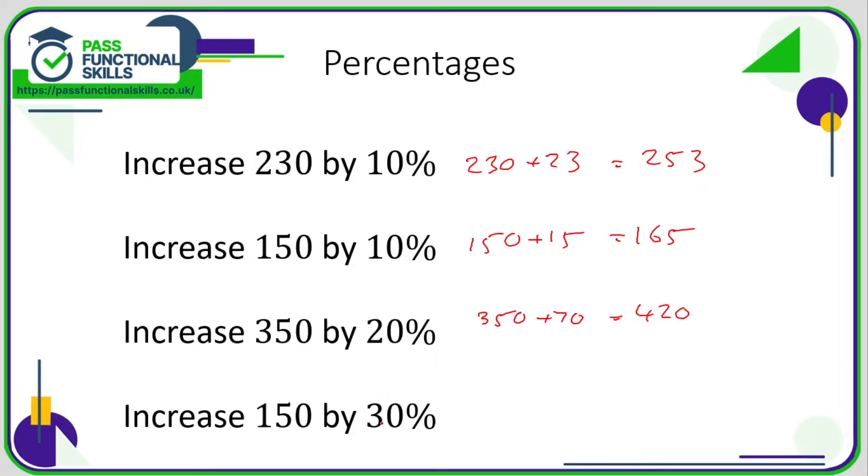Increase 150 by 30%. Well, we need to work out 30% of this amount first and then add it on. 10% is 15, so 30% is 45. So it's 150 plus the 45, which comes to 195.